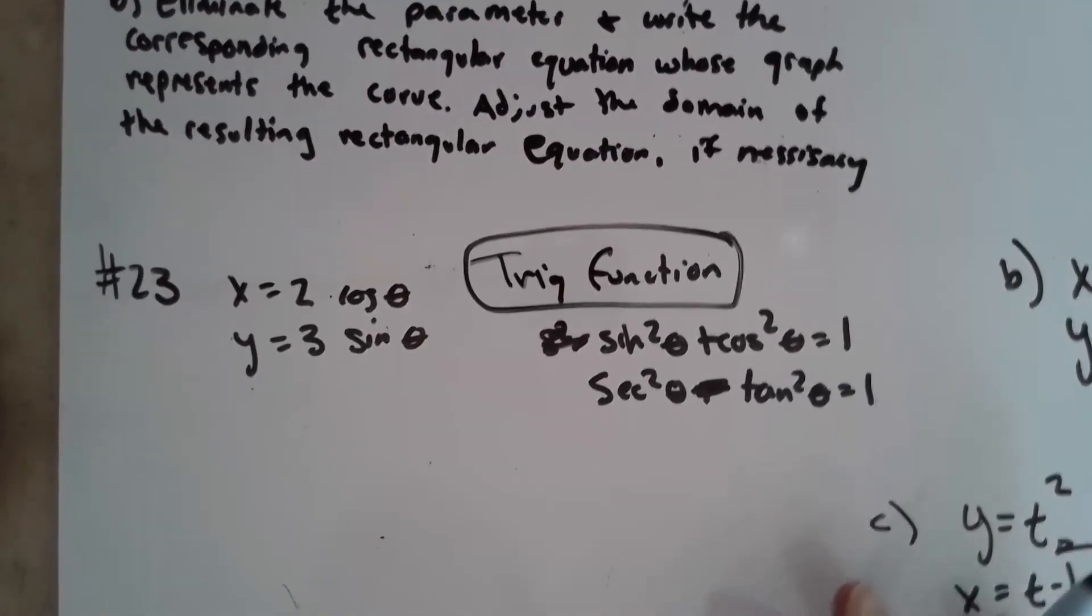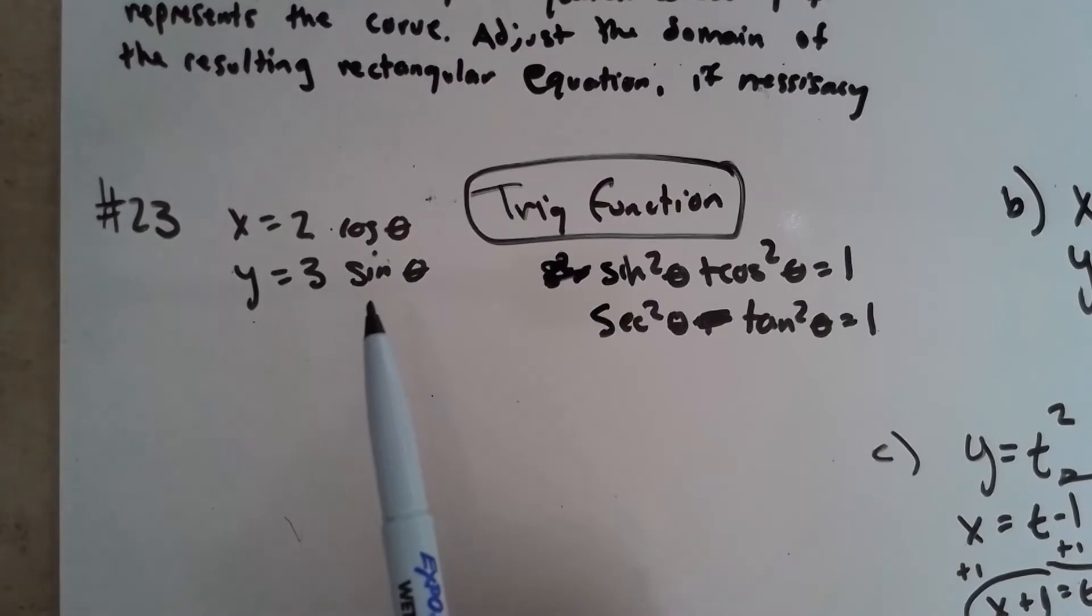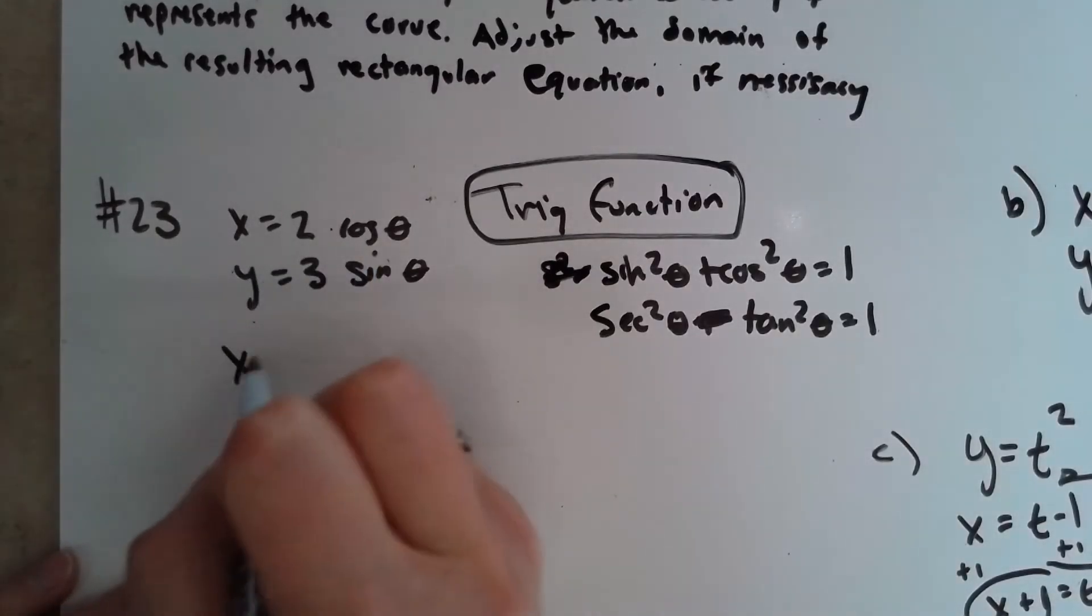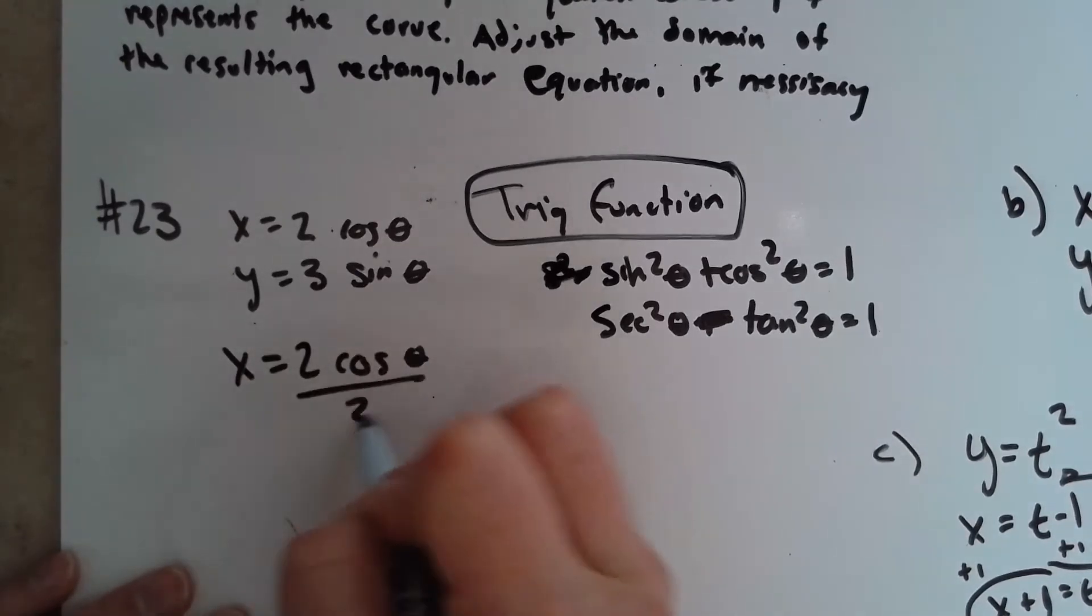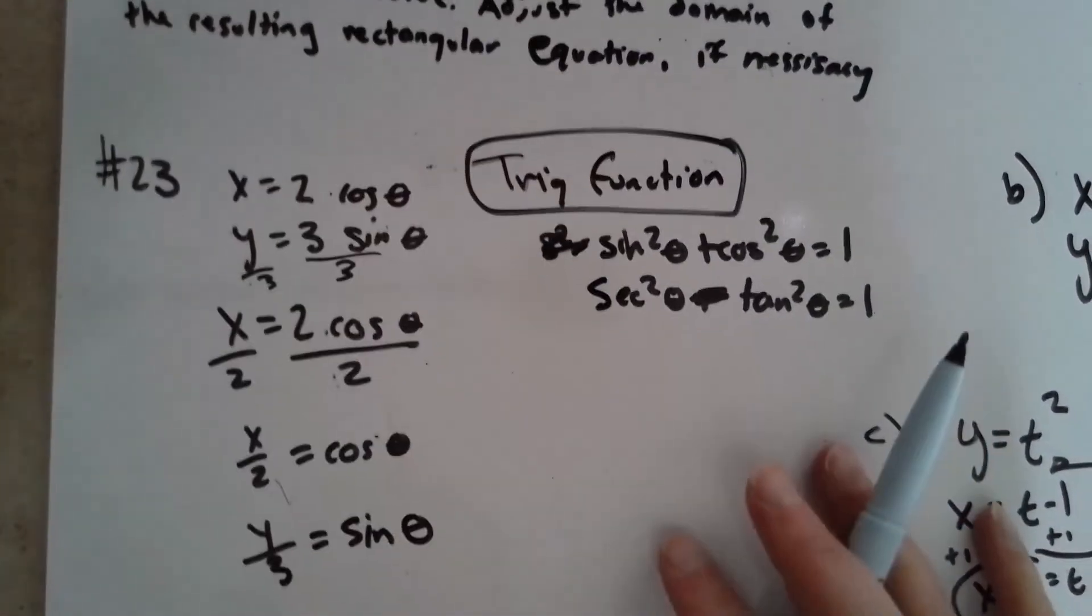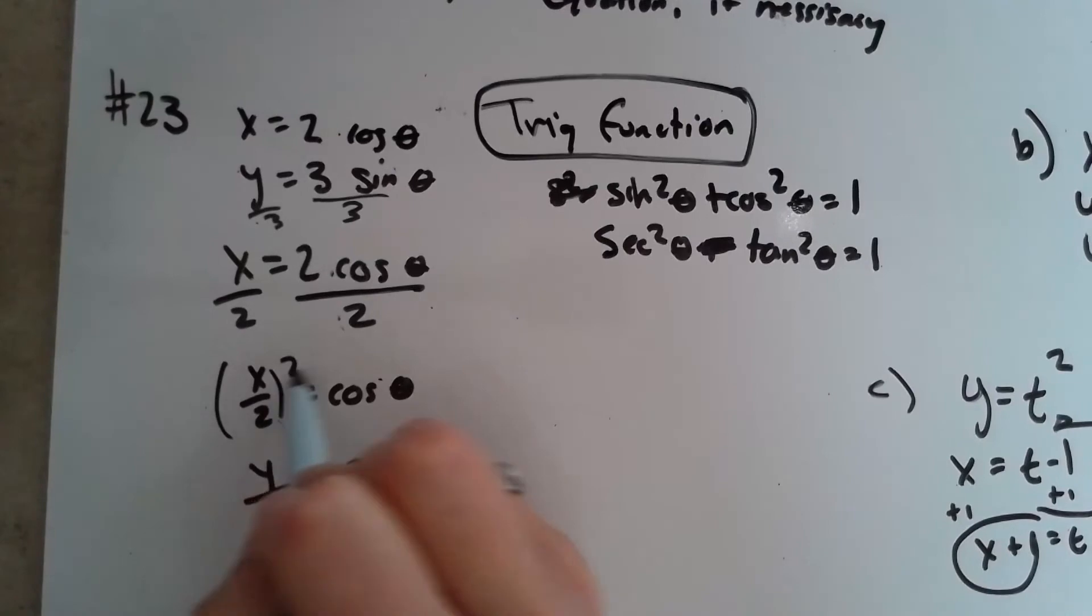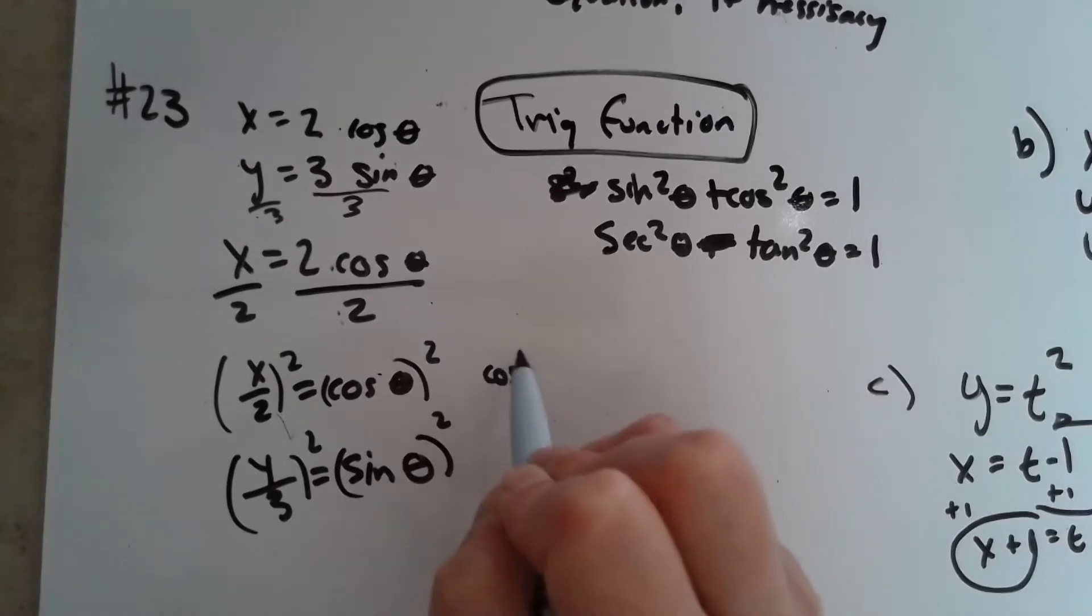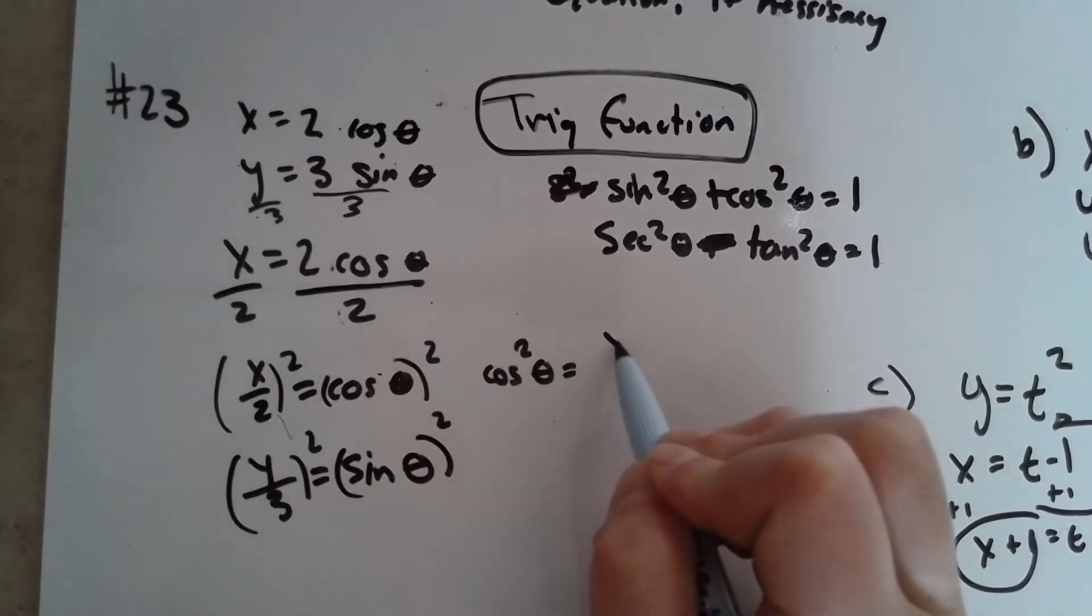Okay, so what I want to do is I want to change this to a rectangular equation. So what we're going to do first is get our cosine and sine by themselves. So x equals 2 cosine theta—I'm going to divide by 2, so x divided by 2 equals cosine theta. Same thing with that one: I'm going to get y divided by 3 equals sine theta. So I just divided by the 3.